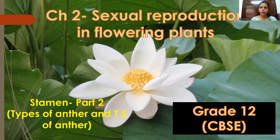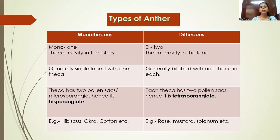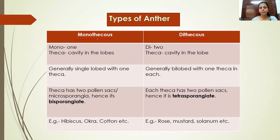In this video we are going to discuss in detail the types of anther based on the number of lobes present in them, and then the transverse section of anther. Based on the number of lobes, there are two types of anther: monothecal and dithecal. We know that in a flower the male reproductive structure is called stamen, which has two parts: anther and filament.